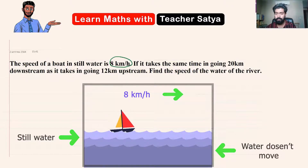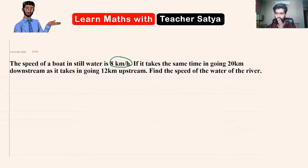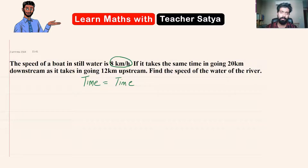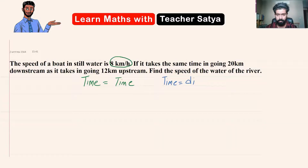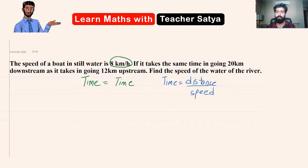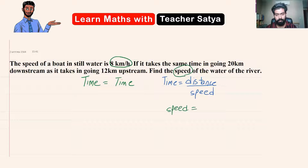We know it takes the same time going 20 kilometers downstream as going 12 kilometers upstream, so time equals time. The distances covered in both cases will be different. We need the formula for time: time equals distance over speed. Whatever we need to find, we take as x. In this case, they want us to find the speed of the water, so let's say speed equals x.